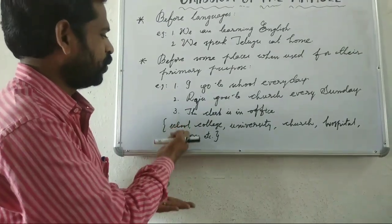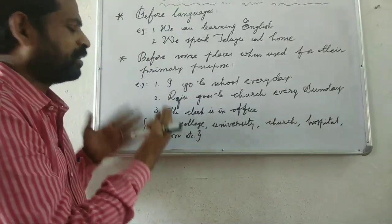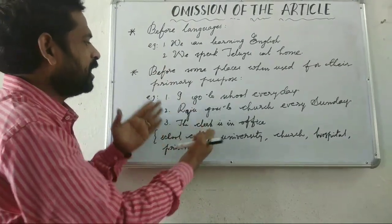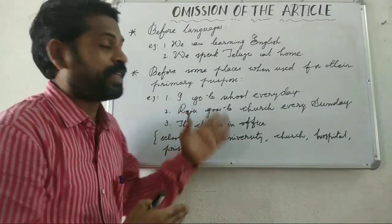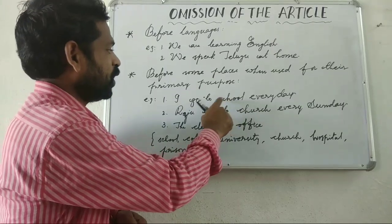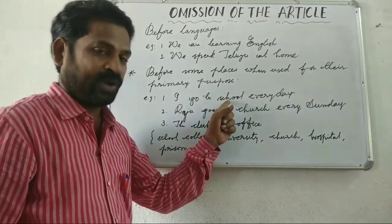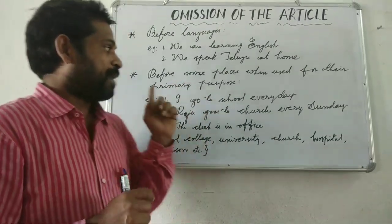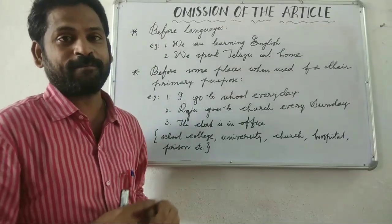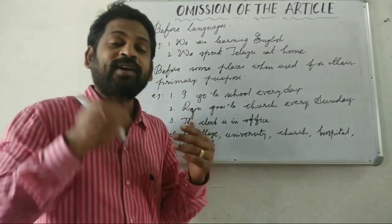Words like school, college, university, church, hospital, and prison — we need not use an article in front of them when they are used for their primary purpose. However, I can use 'the school' with an article in a different context: 'My father came to the school to pay the fee.' Here school is not being used for its primary purpose of teaching, so we say 'the school.'